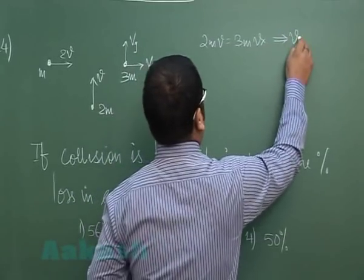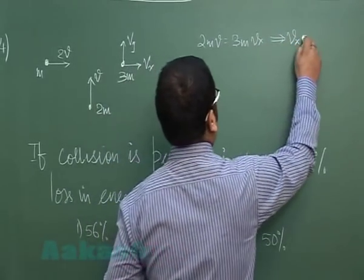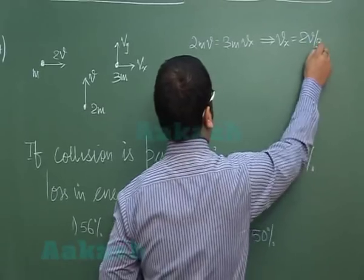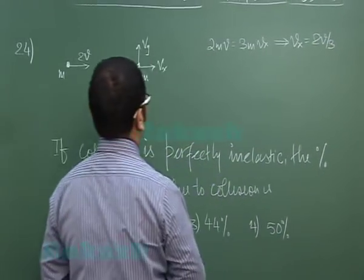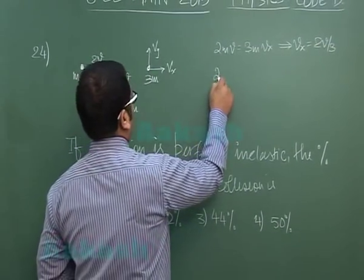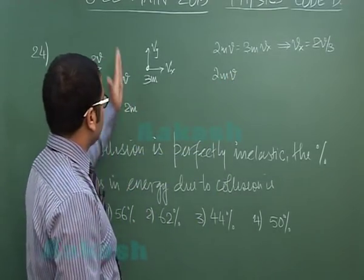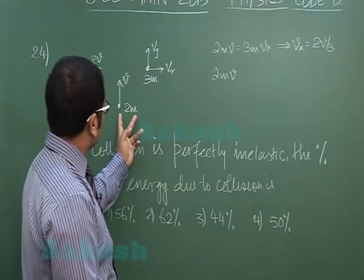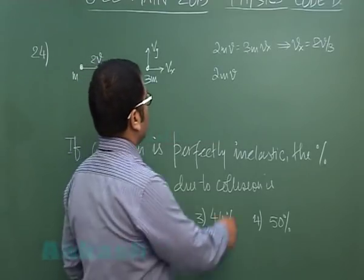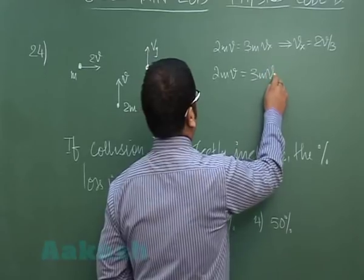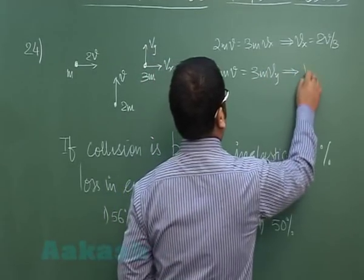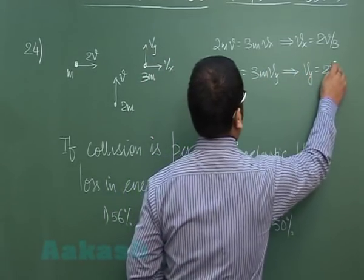Similarly, 2m times v is the y-component momentum. 2m mass into speed, and that would be y-component momentum 3mvy. So this gives vy equals to 2v by 3. The final speed could be calculated easily by root of vx squared plus vy squared.